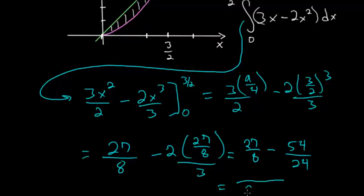Finding a common denominator of 24, we just multiply this 27 by 3 so that we have 81 minus 54. And 81 minus 54 is just 27 divided by 24. And this fraction simplifies to 9 eighths. So the area between these two curves in the first quadrant is 9 eighths.